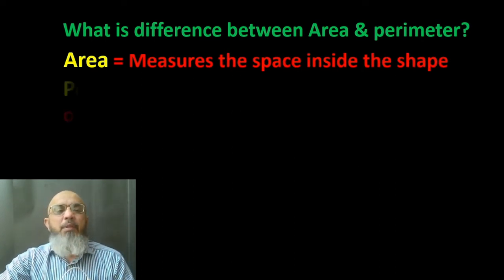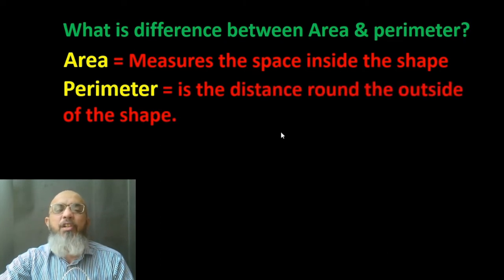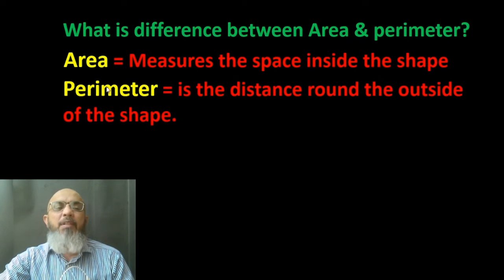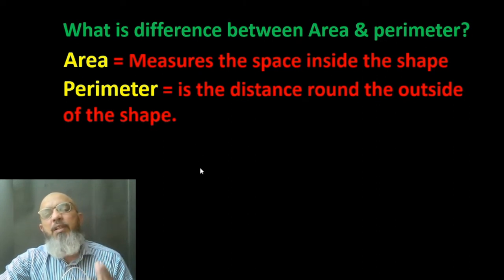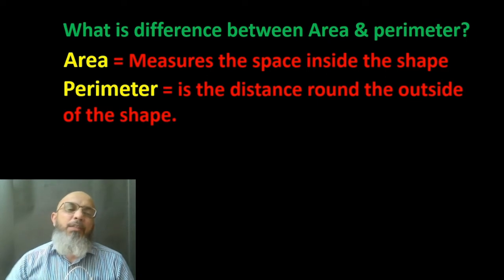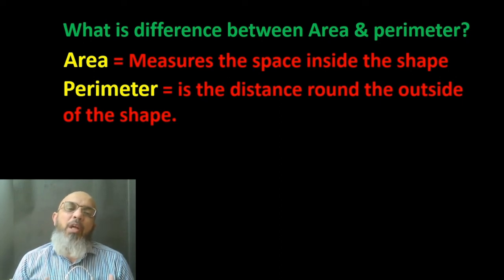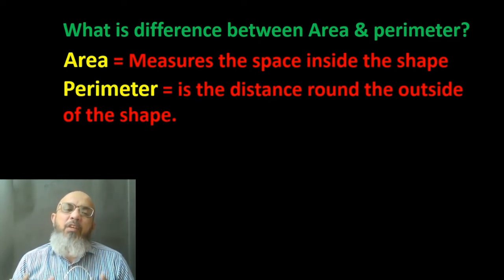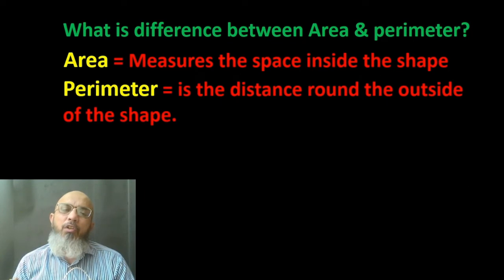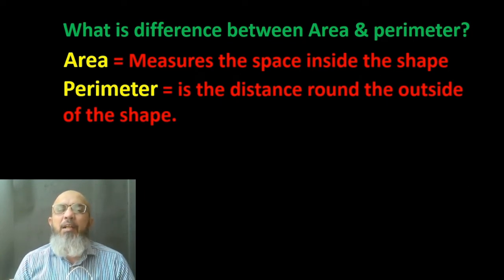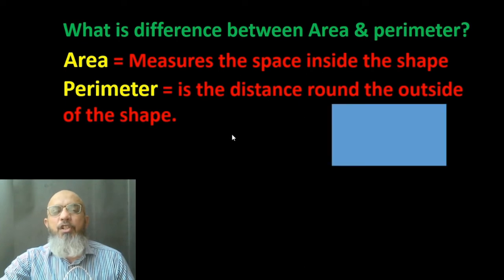In geometrical shapes, area is the measure of the space inside the shape, and perimeter is the distance around the outside of the shape — in other words, the sum of all sides. For example, suppose we have a lawn and we want to fence it — then we need its perimeter. And if we want to install grass on the lawn, we find its area — the space inside the shape.